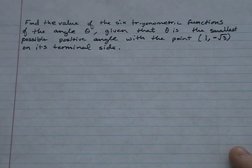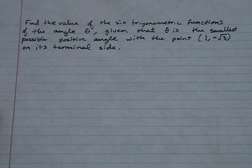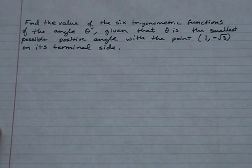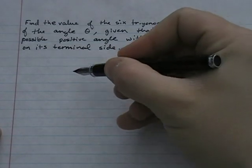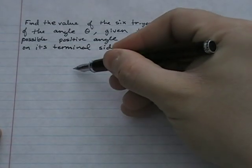Today we've been asked to find the value of the six trigonometric functions of the angle theta, given that theta is the smallest possible positive angle with the point (1, -√3) on its terminal side. The first thing I want to do is draw this angle.